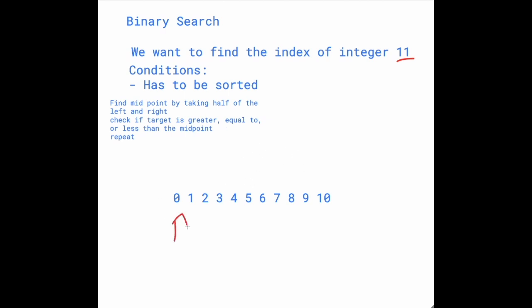So how do we find the midpoint? 0 plus 10, right? That's 10 divided by 2 is 5. So we'll go here. So what we did was 0 plus 10 over 2. That gave us 5. So this is our midpoint.